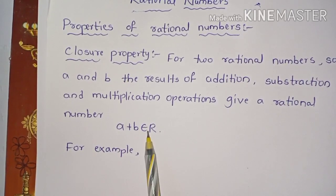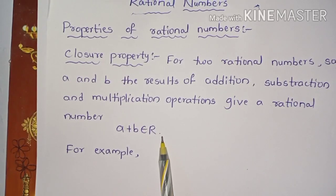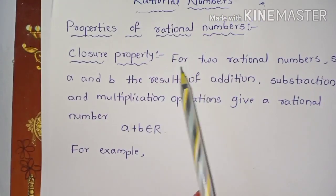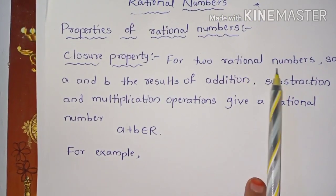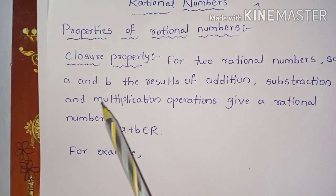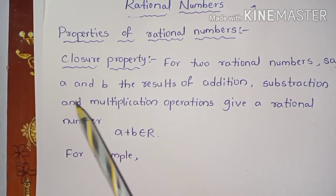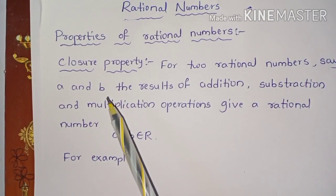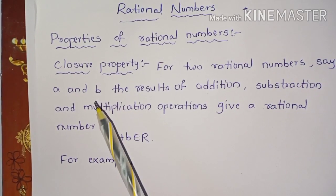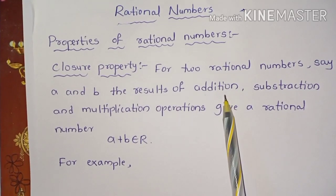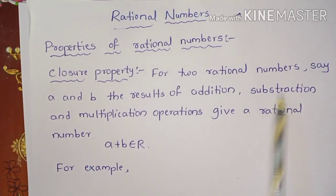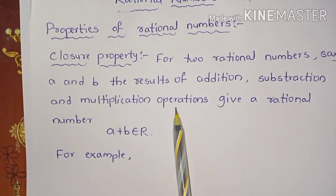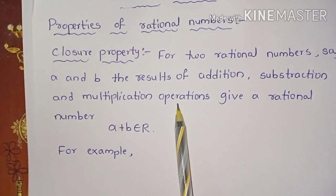So A plus B belongs to R. In closure property, A and B are two rational numbers, and the operations of addition, subtraction, and multiplication satisfy this closure property.